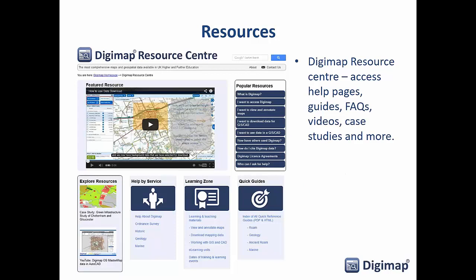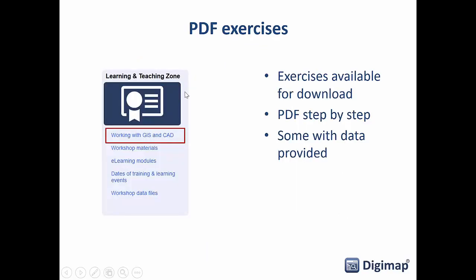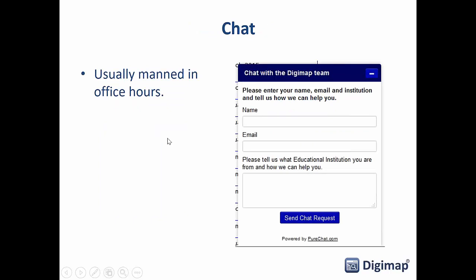For more information, the Digimap Resource Centre is linked from the help pages on the homepage. There you'll find links to all the different help pages, guides, FAQs, videos, and webinars like this one, as well as case studies. There's a QGIS section with more information and guides on using Digimap data in QGIS. In the Learning and Teaching Zone there are step-by-step PDF guides that come with data, some written specifically for QGIS. There's also a chat box available during office hours if you have more questions, or you can email or phone us.